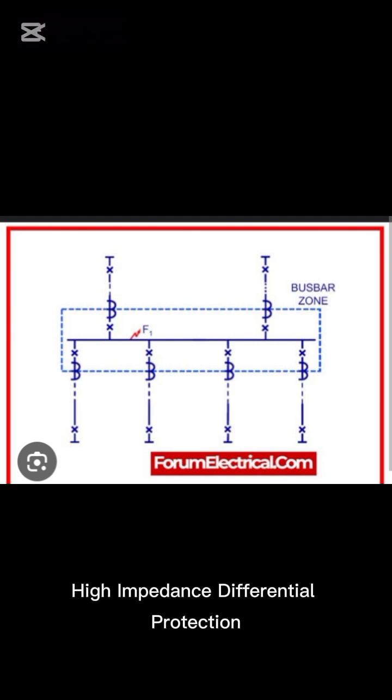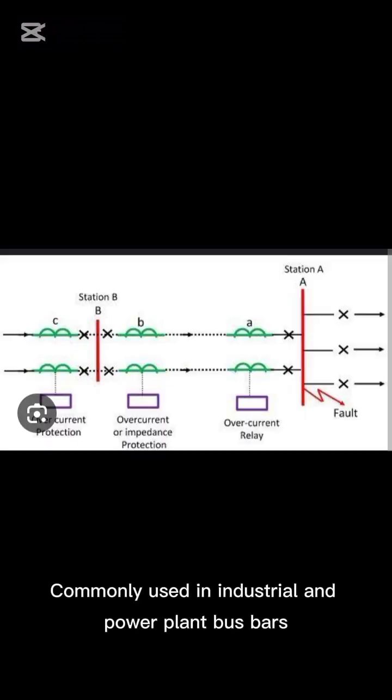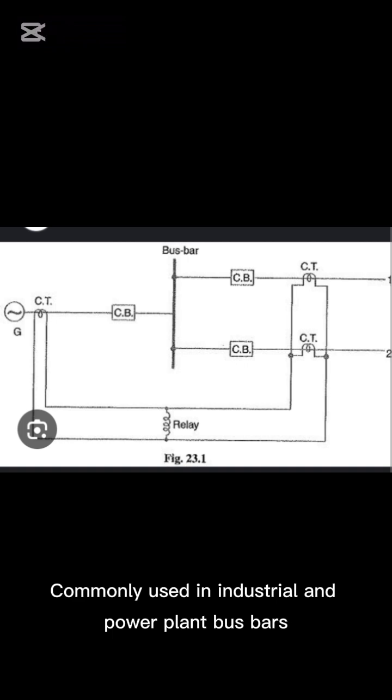High impedance differential protection. Commonly used in industrial and power plant bus bars to detect even small faults accurately.